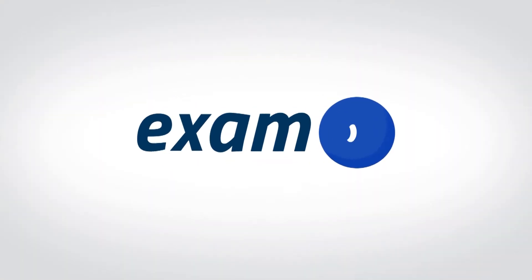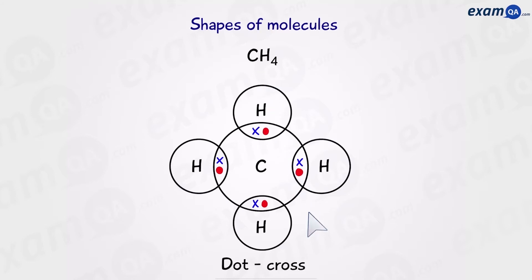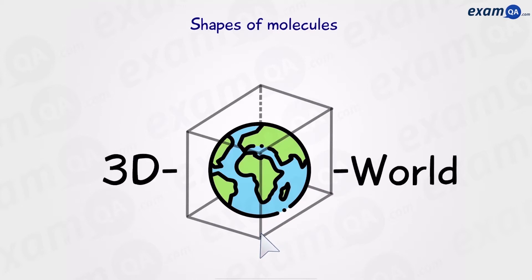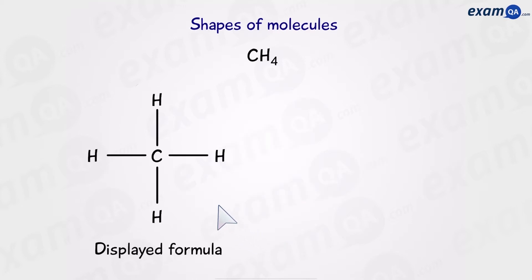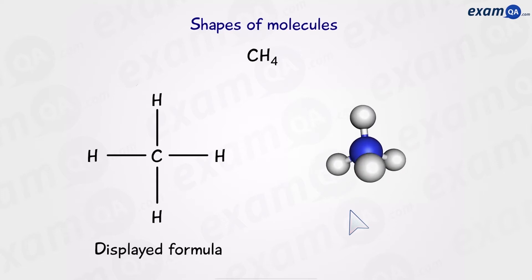Shapes of Molecules. Methane can be drawn like this in a dot and cross diagram — we have carbon surrounded by four hydrogen atoms. Or we can represent it as a displayed formula. However, both of these diagrams forget to take something into account: that we live in a three-dimensional world. So the same methane molecule, in reality, would look something like this — a three-dimensional model.